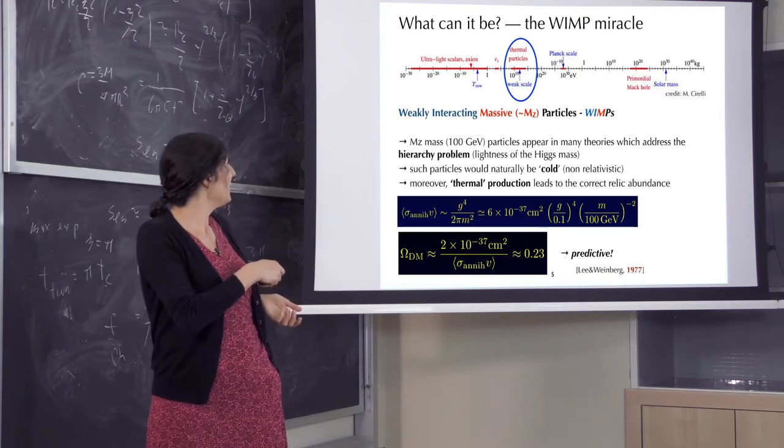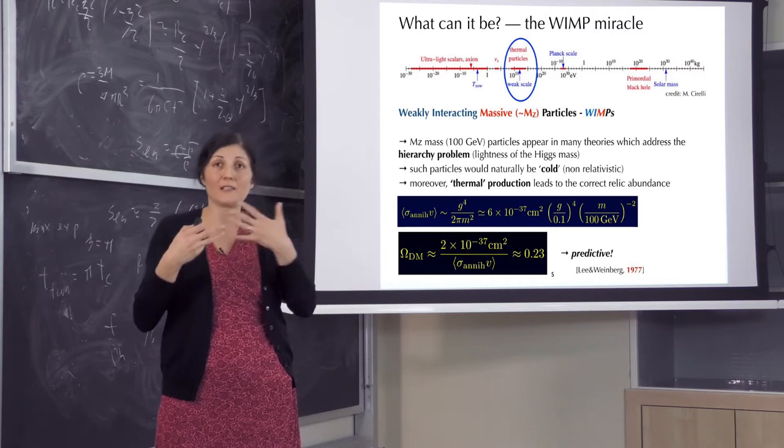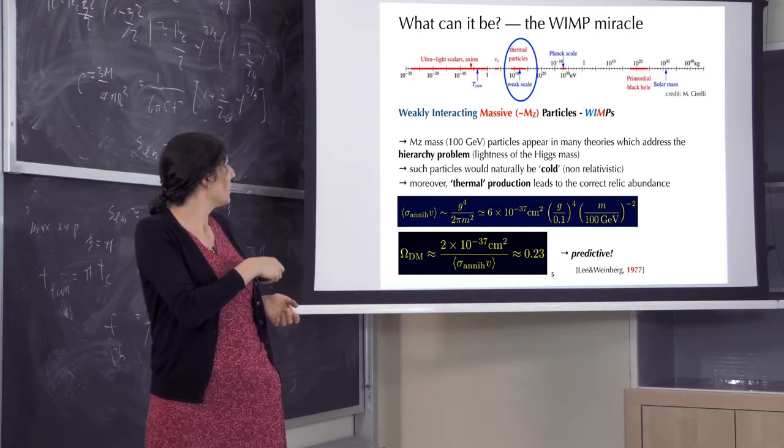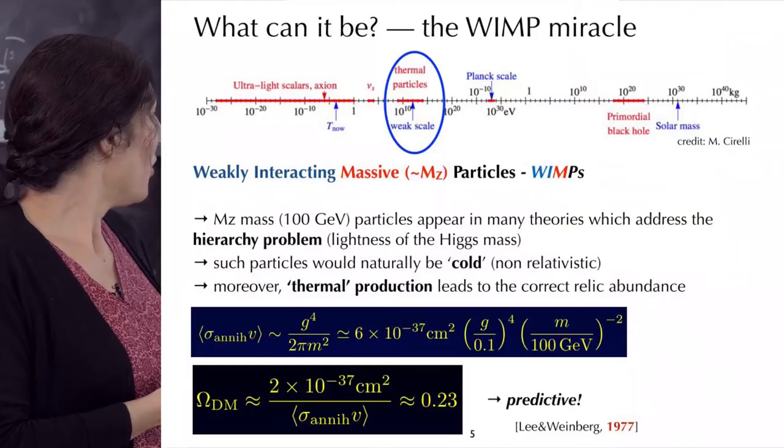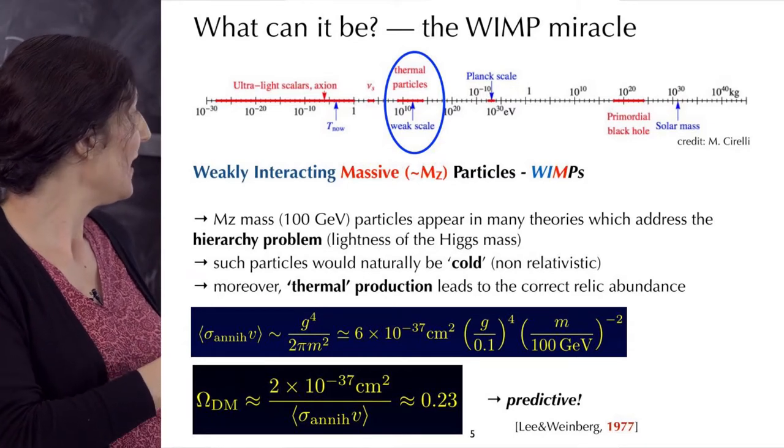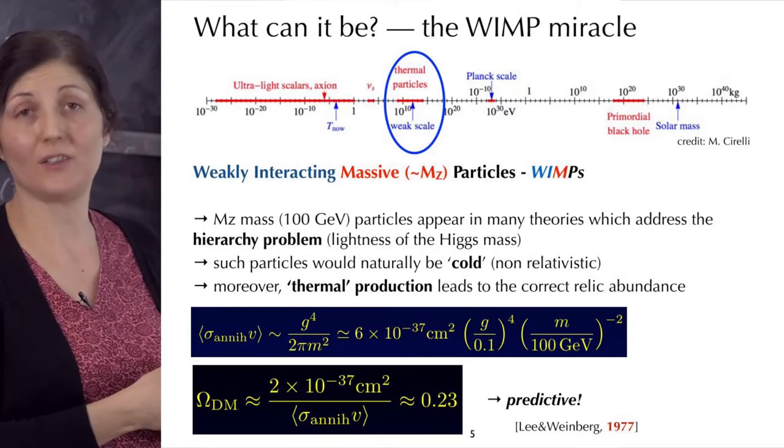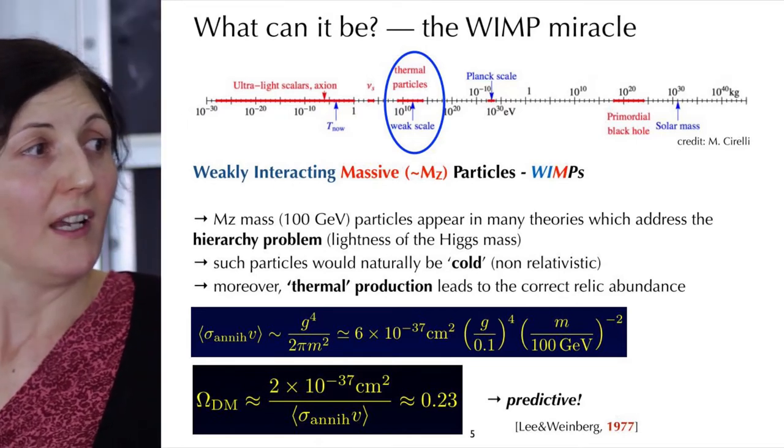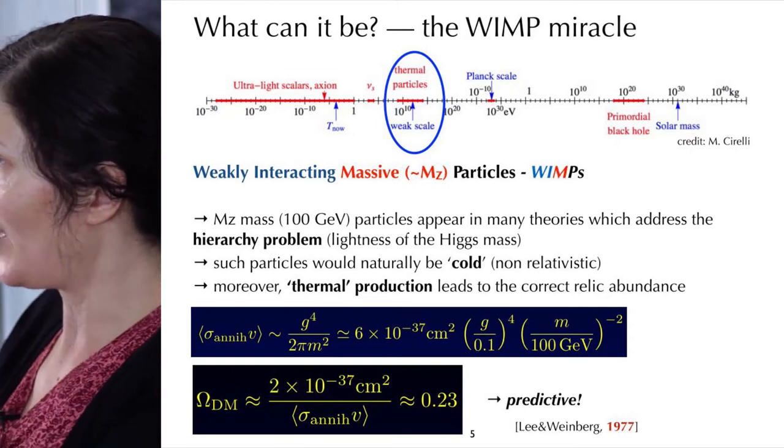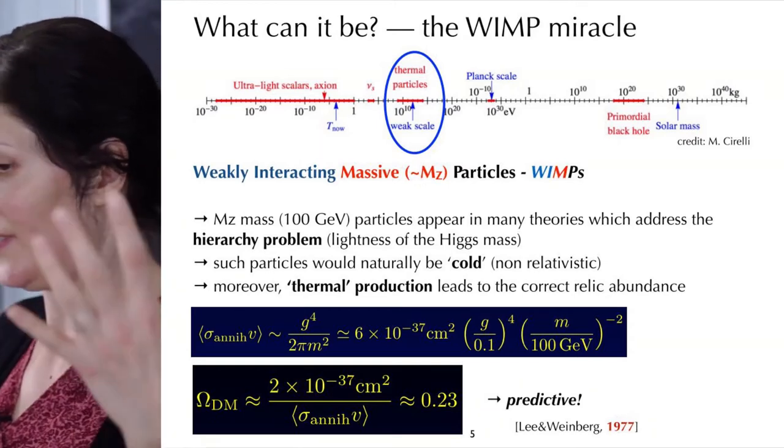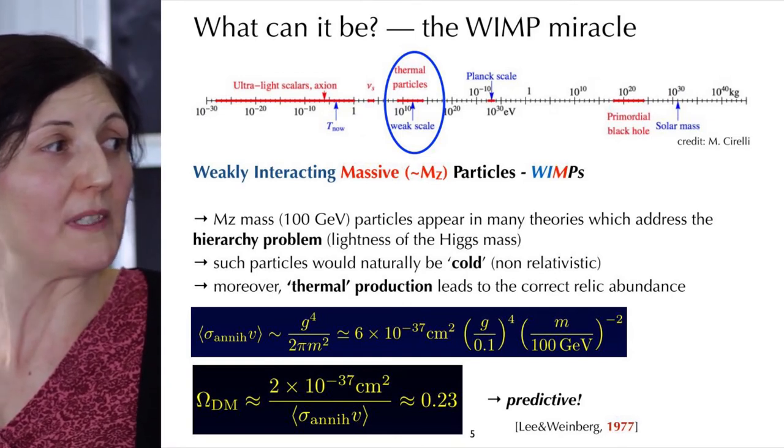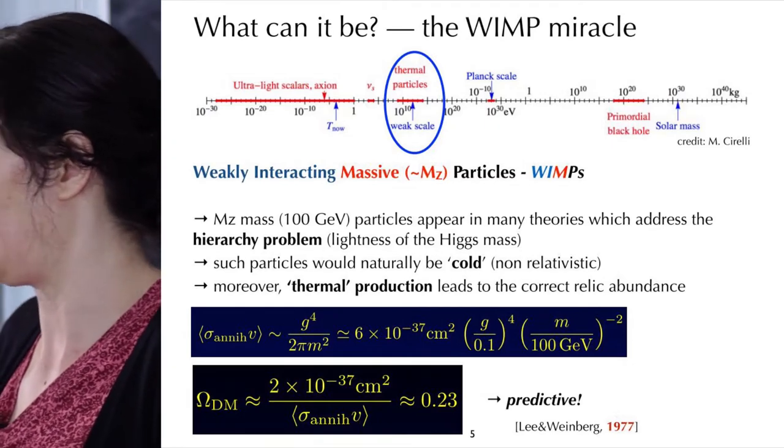Many theories believe that some new particles with mass close to the gauge bosons, to Z and W bosons, could complete our standard model. Also, if a particle would have mass around 100 GeV, it would interact with such a cross-section that in the universe, if such particles interacted with each other early on and then stopped interacting and just remained, one could explain the observed amount of dark matter that we know for a fact today.